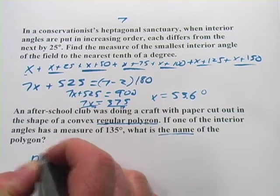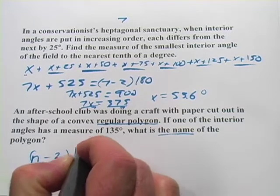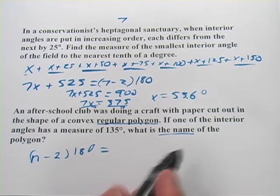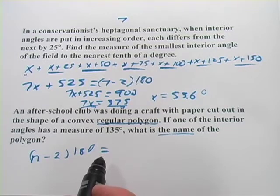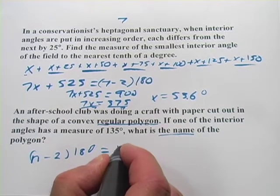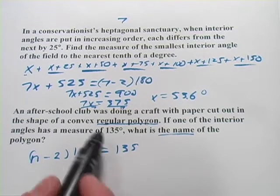We just used it up here. It's the number of sides minus 2 times 180 equals the sum of these angles. So equals 135. Well, that would be one of them.